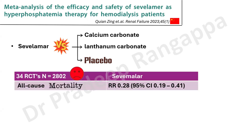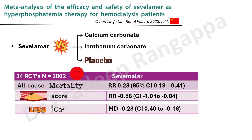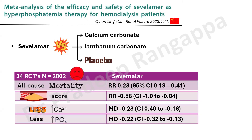This 2023 meta-analysis — the largest of its kind — included 34 randomized controlled trials with 2802 patients comparing Sevelamer against calcium carbonate, lanthanum carbonate, and placebo. The results were very interesting: all-cause mortality was significantly less in the Sevelamer group compared to calcium carbonate or lanthanum carbonate. Vessel calcification score was also significantly less in the Sevelamer group. There was less hypercalcemia and less hyperphosphatemia as well.